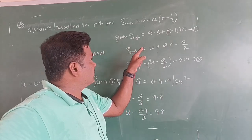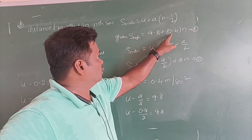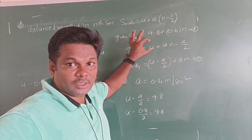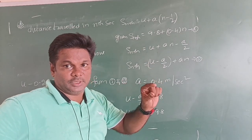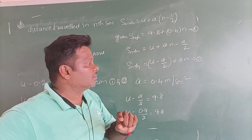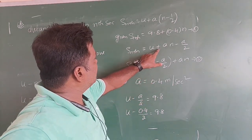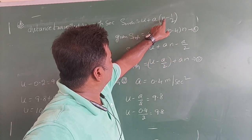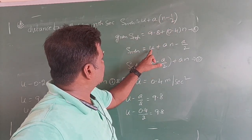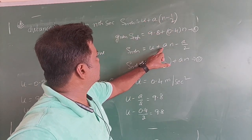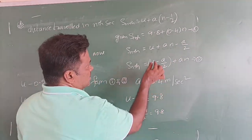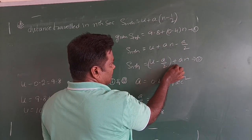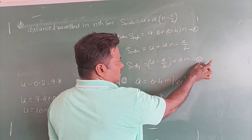What is given in our problem? Sₙ = 9.8 + 0.4n. This is equation 1. Now how can this equation be transformed? Expanding U + A(n − ½) gives U + An − A/2. Rearranging, this is (U − A/2) + An. This can be taken as equation 2. Compare these two equations — observe the coefficient of n and the constant term.